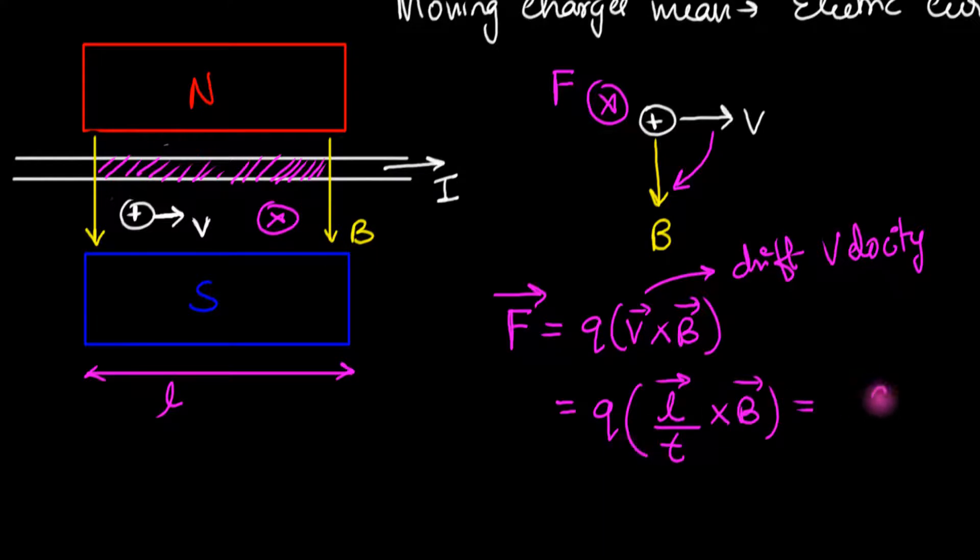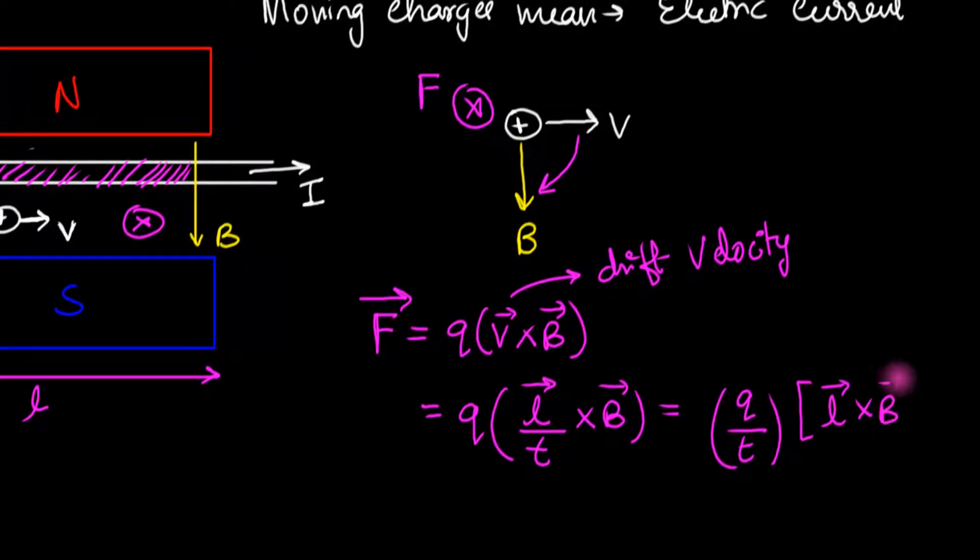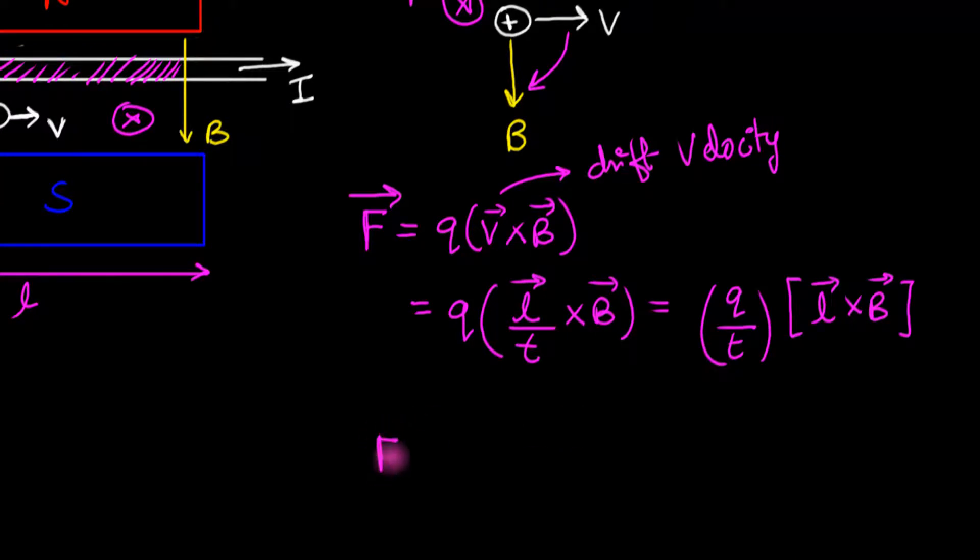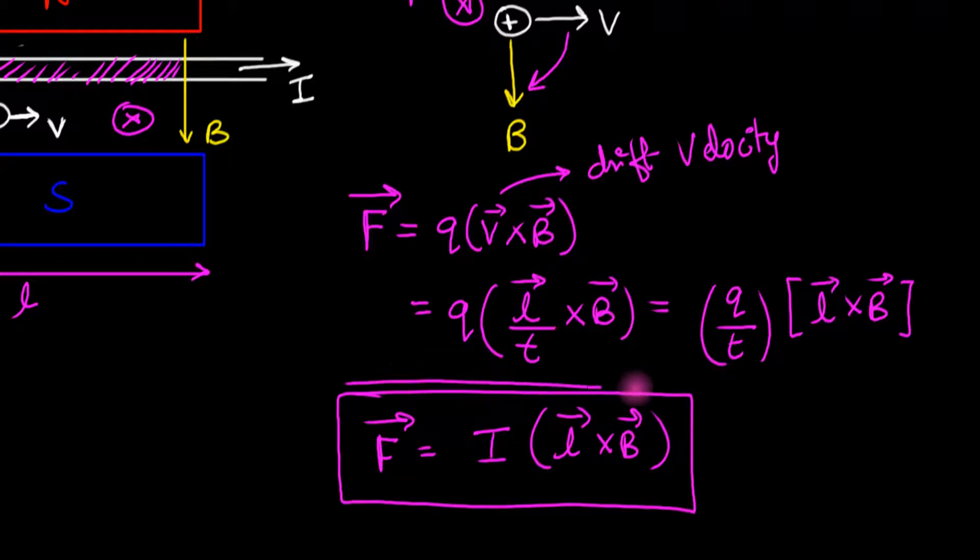And I can now write this a little differently. I can combine the Q and the T together. And I think you can see where I'm going with this. What is Q divided by T? Q divided by T is just the current. It's the current through the wire, isn't it? So it's the current I times L cross B. And there we have it. This is the magnetic force that acts on a current carrying wire.